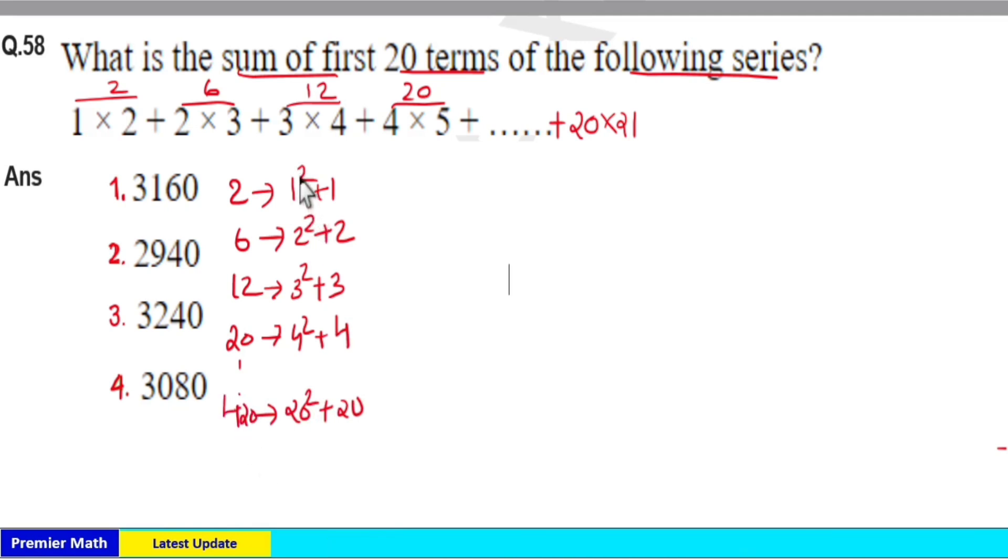Now this is sum of square of first 20 natural numbers and this is sum of first 20 natural numbers.